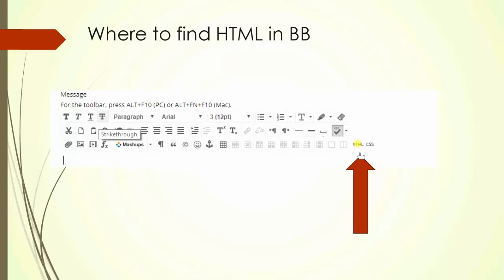The HTML button would be the one that you use if you run into trouble using the normal Blackboard tools, which you have here like bold, italics, paragraph, font size, font name, and so on. All of these buttons that you press in Blackboard are actually adding HTML to the back end so that it can create whatever you're posting.